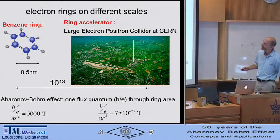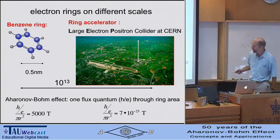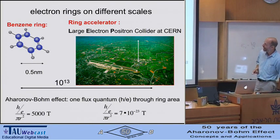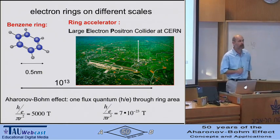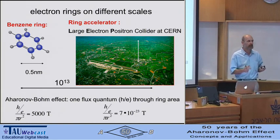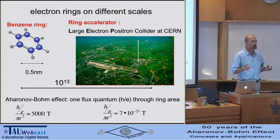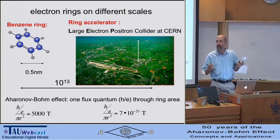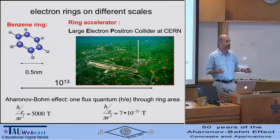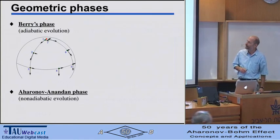For the benzene ring, a flux quantum corresponds to roughly 5,000 Tesla—a very tough experiment. For the LHC, it's of course a super tiny magnetic field. The message is that if you go to mesoscopic structures on the length scale of 100 nanometers, we are very fortunate that the magnetic field corresponding to one flux quantum is roughly 100 millitesla to one Tesla, which is easily accessible in the lab. These are very nice length scales to do the Aharonov-Bohm experiment.